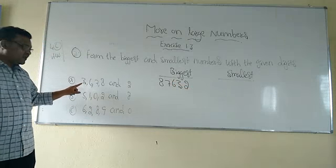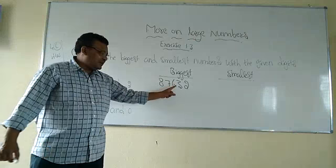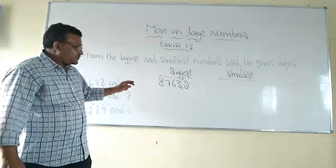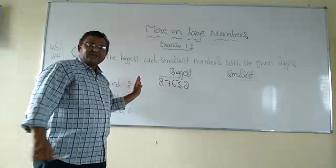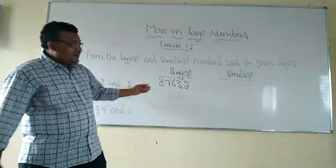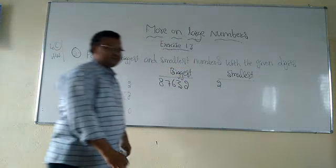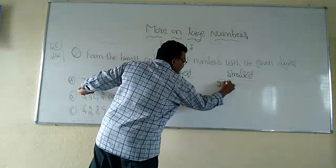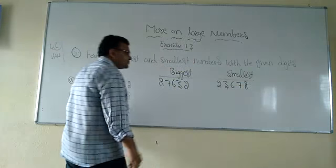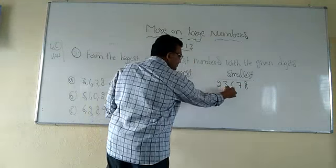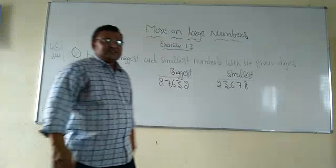Before writing, just count the digits — how many digits are there: one, two, three, four, five. So all five digits are used. We write the digits in descending order. And in writing the smallest number, the smallest digit is two. Next bigger than that is three, next is six, next is seven, and then eight. Separate them using commas in the Indian system: biggest is 87,632 and smallest is 23,678.